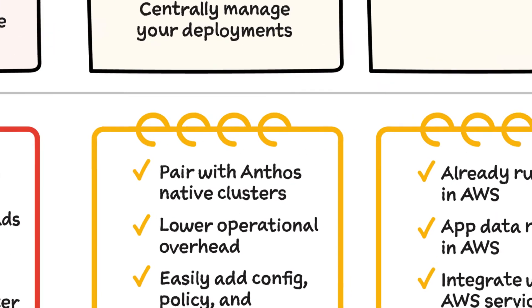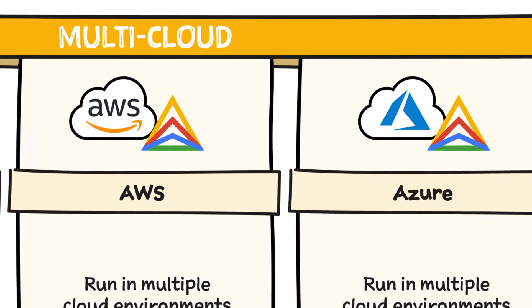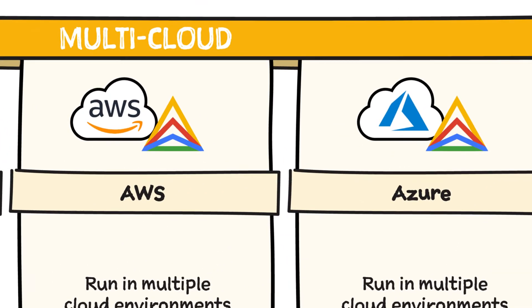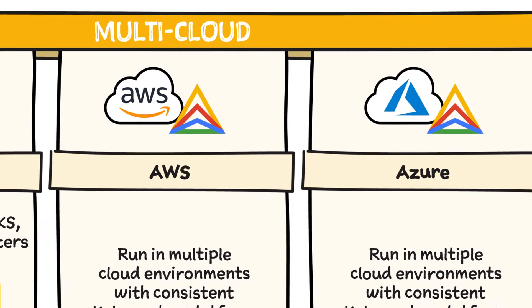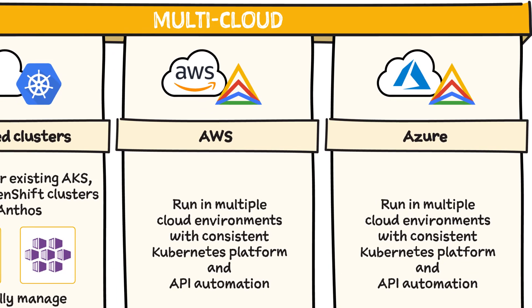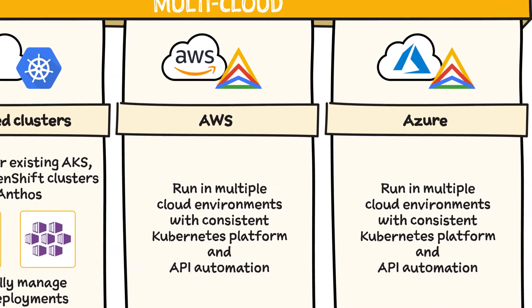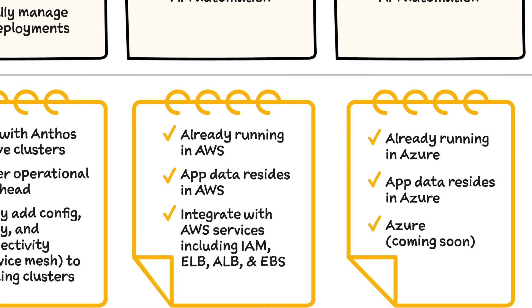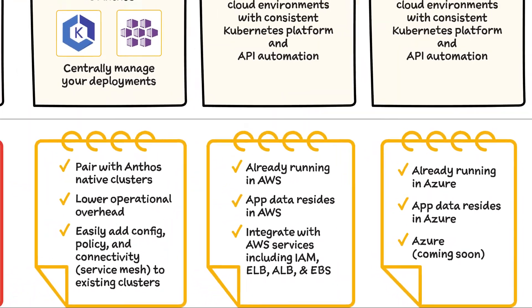If you're already running some of your apps in AWS or Azure, then running an Anthos cluster on AWS or Azure, respectively, is a great idea because you can run in multiple cloud environments with common platform and API automation.